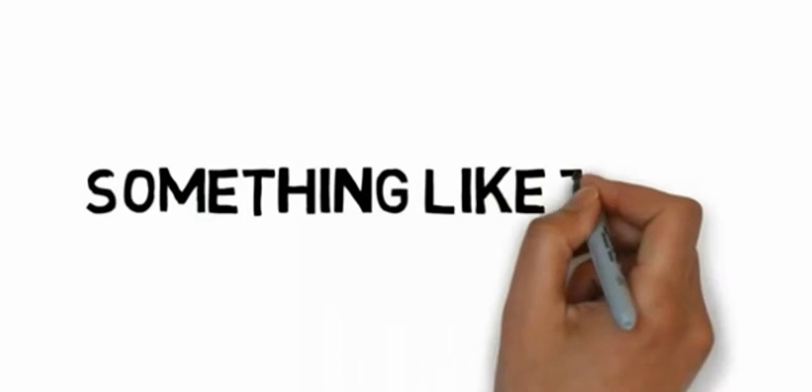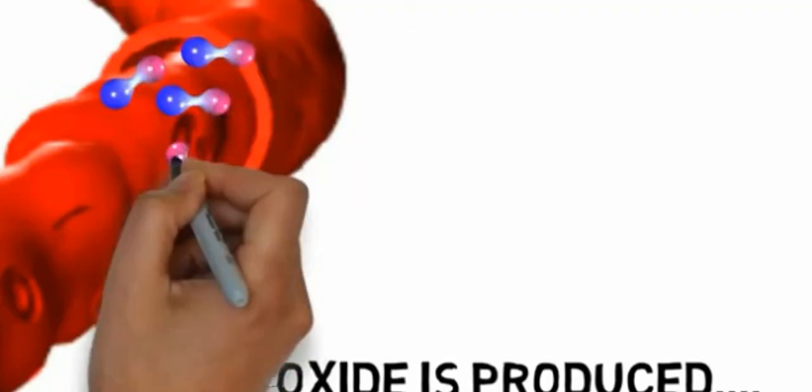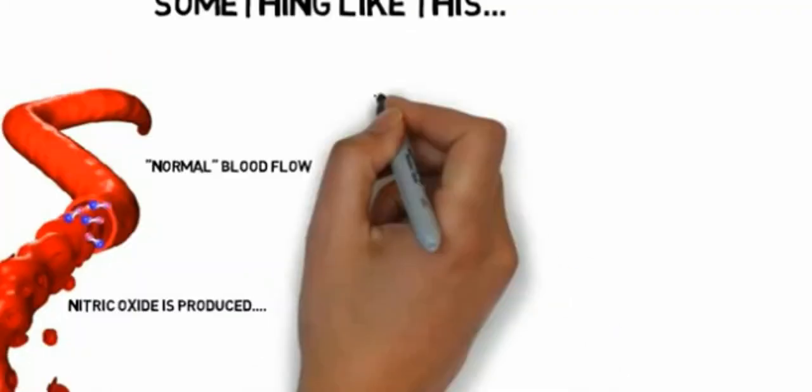It looks something like this. This represents normal blood flow. When nitric oxide is produced, it promotes vasodilation. That supports peak circulation.